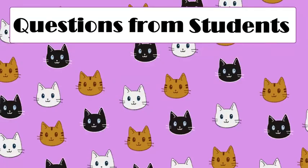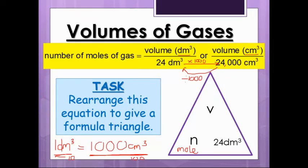Is it always 24 or 24,000? Yes, for reasons that I'm not going to go into too much. 24 decimetre cubed is called the molar gas volume. If you are a smarty pants or a clever clog, you might want to look into that a little bit more. But for now, I am just going to leave that as that.